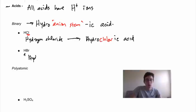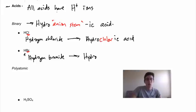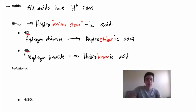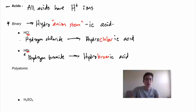HBr follows the same pattern. We have hydrogen here, so this would be hydrogen bromide. Bromine is the anion, so if we name this as an acid dissolved in solution, we get hydro + bromine stem 'brom' + -ic = hydrobromic acid. Binary acids are simple: hydro + anion stem + -ic acid.